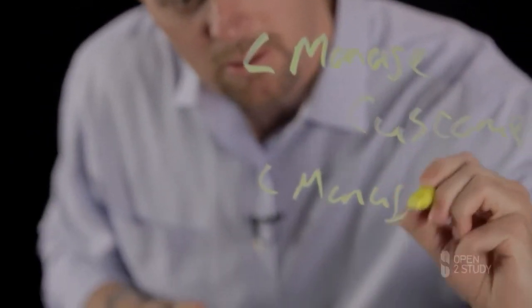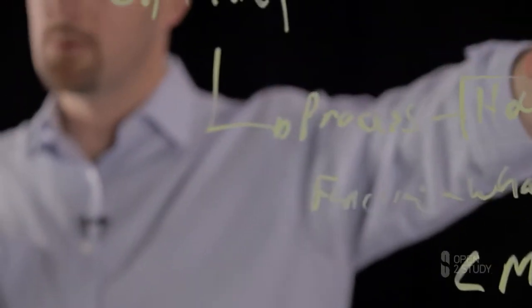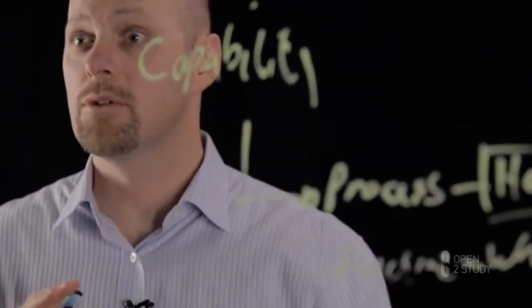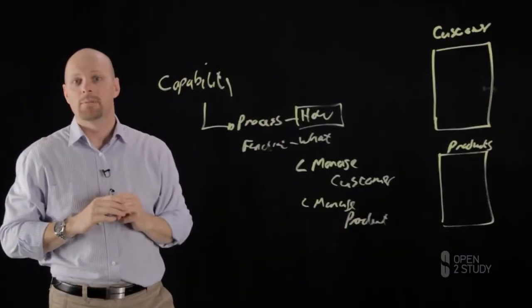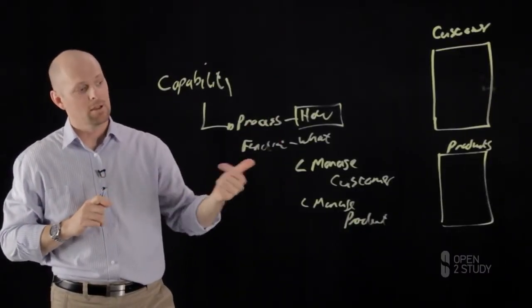So, we've got two functions that sit here and they could be strung together with a process which says customers ordering a new product. So, you can kind of see customer orders a new product. In order for a customer to order a new product, there's two functional building blocks we need to look at: Manage customer and manage product.